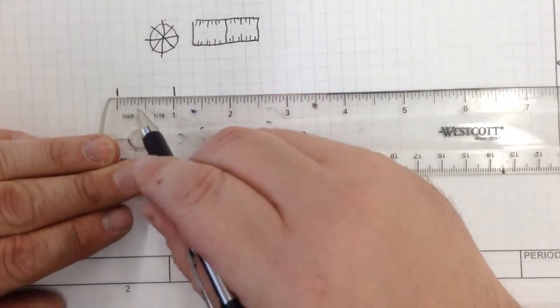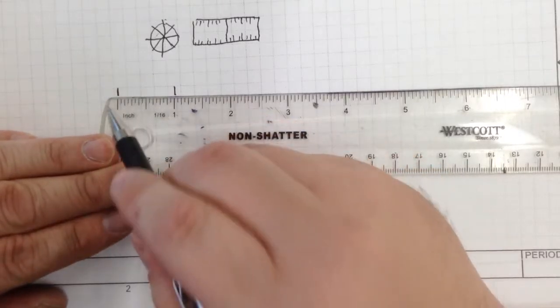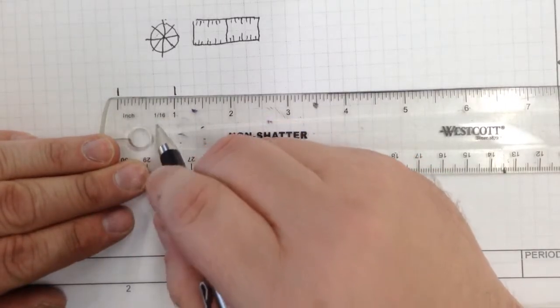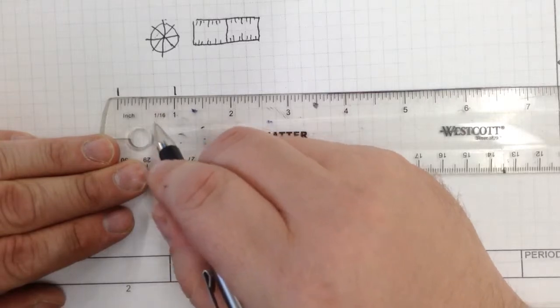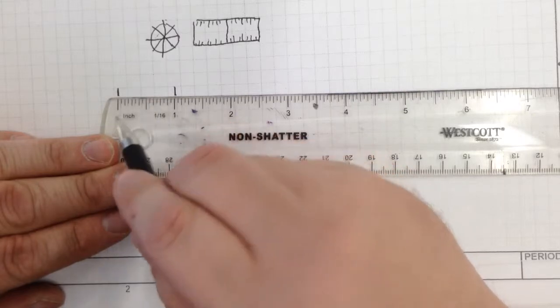Now when you start breaking it down into the fractions, this is where you're going to get confused. The easiest thing to think of, or to look at, is this ruler is broken down in one-sixteenth of an inch increments. That means in every single inch, there are sixteen lines.